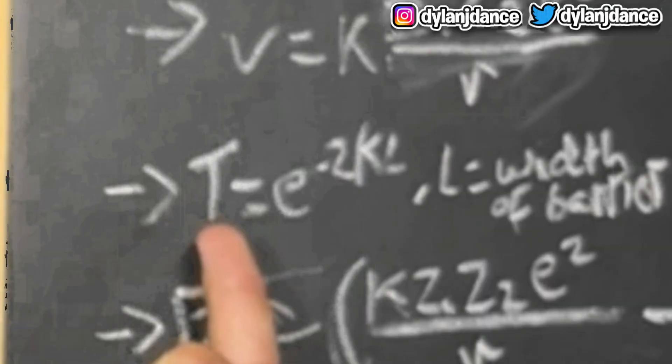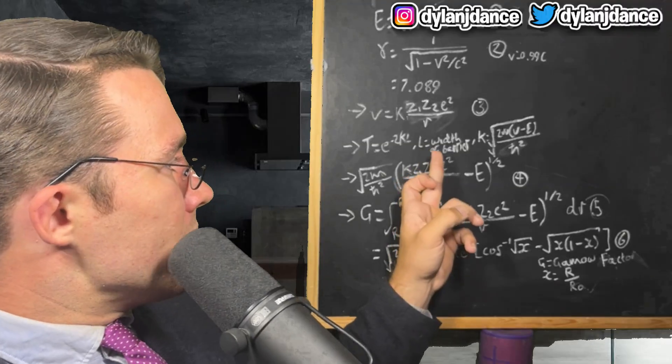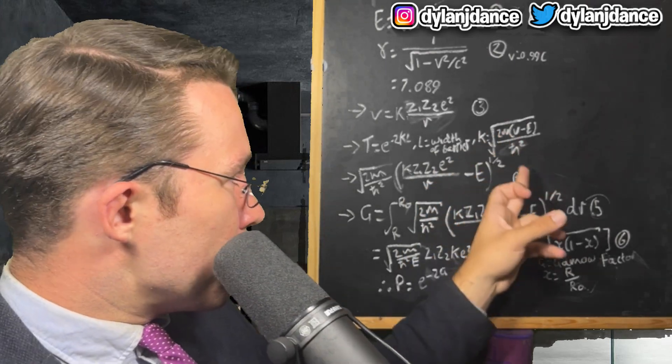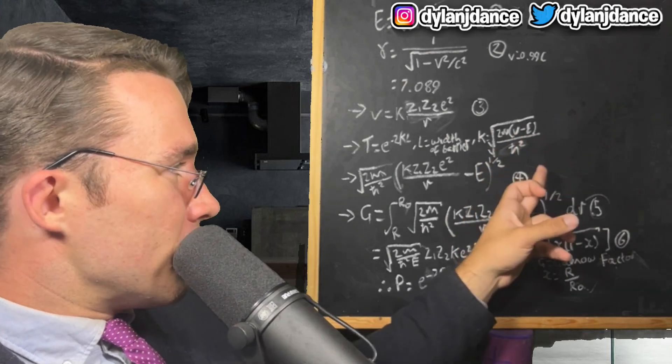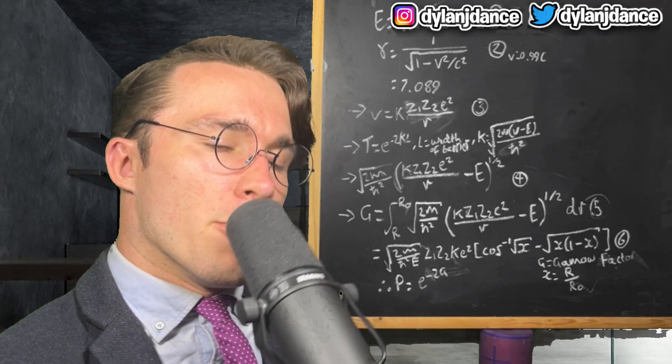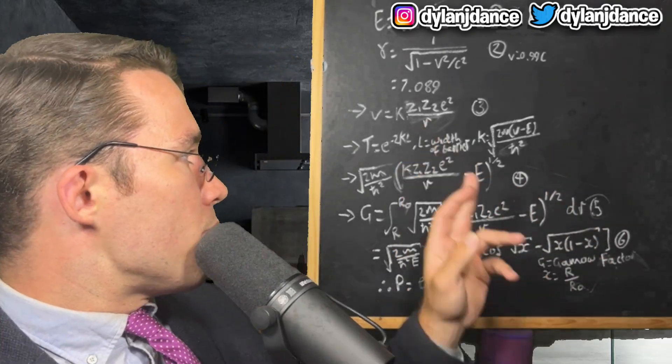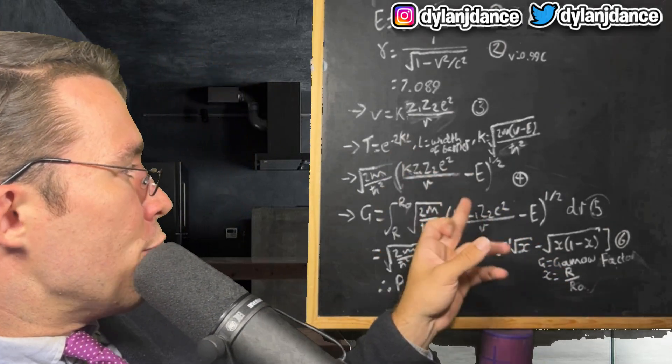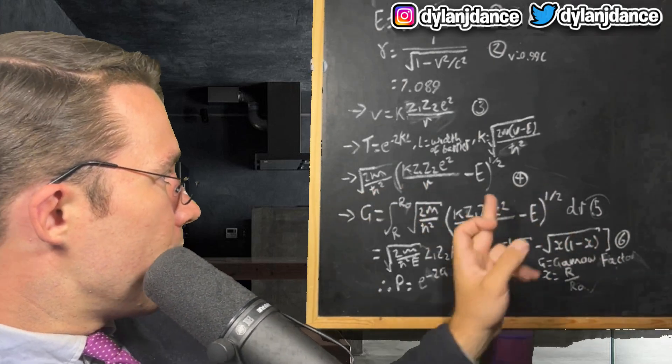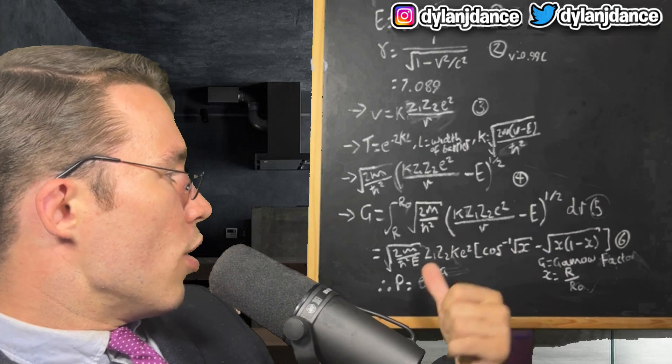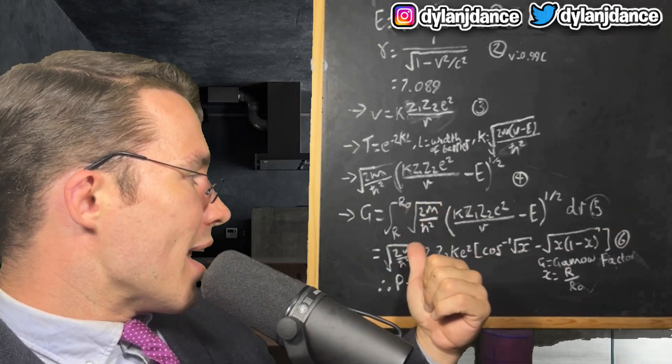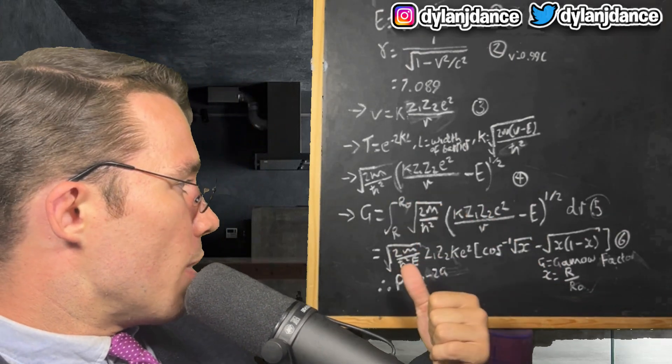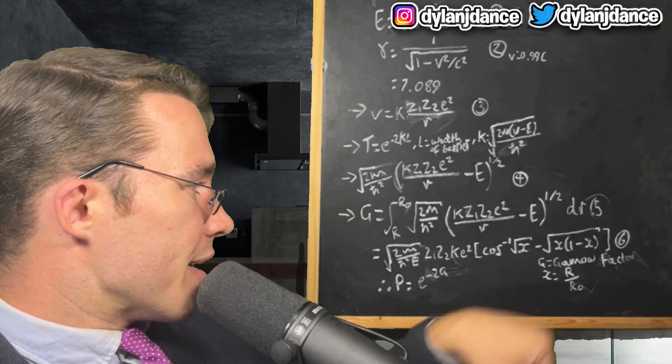Transmission probability is given by T equals e to the negative 2KL. L is the width of the constant potential barrier, and K equals the square root of 2M(V minus E) over h-bar squared. However, equation 3 shows that the potential energy varies with R, so we have to modify the exponent to this big boy over here, we'll call that number 4. Then we integrated equation 4 over the width of the Coulomb barrier. R0 is the radius of the nucleus and big R is the outer radius of the Coulomb barrier.